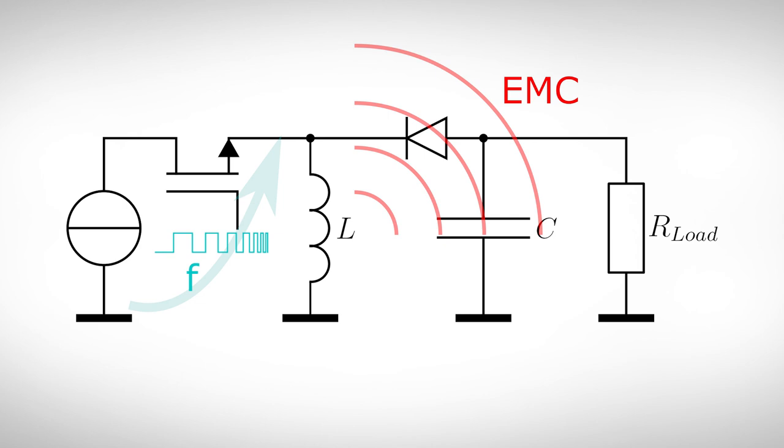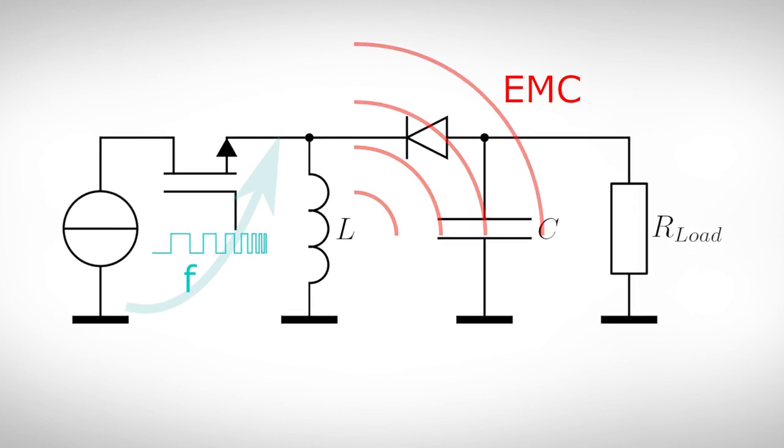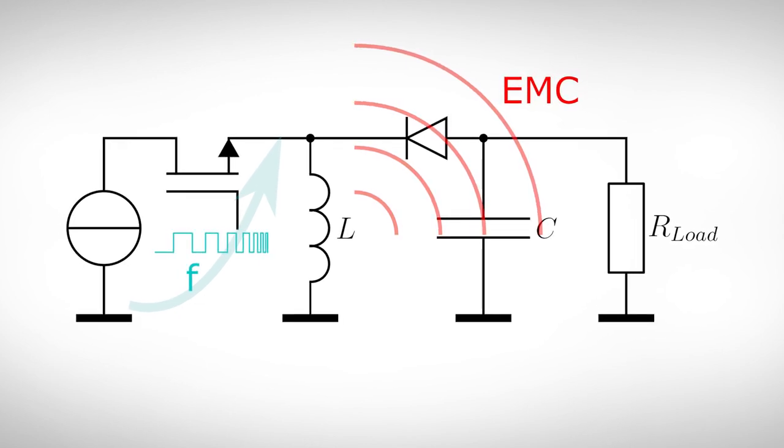Unfortunately, higher switching frequencies also lead to higher losses in the transistor and also electromagnetic emissions become more and more a problem. The increased use of switched mode power supplies in combination with the rise of the switching frequency leads to major problems with regard to electromagnetic compatibility, but this will be extensively covered in a few of our next videos.